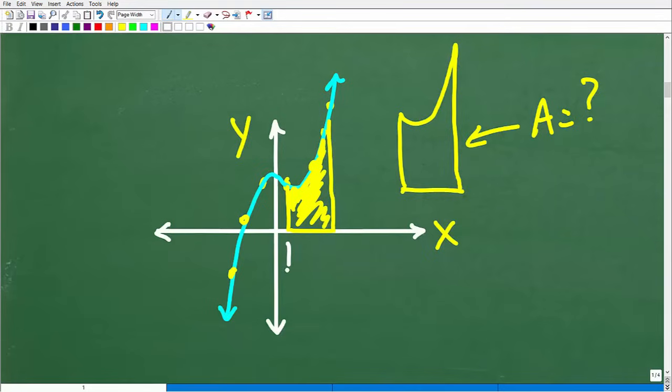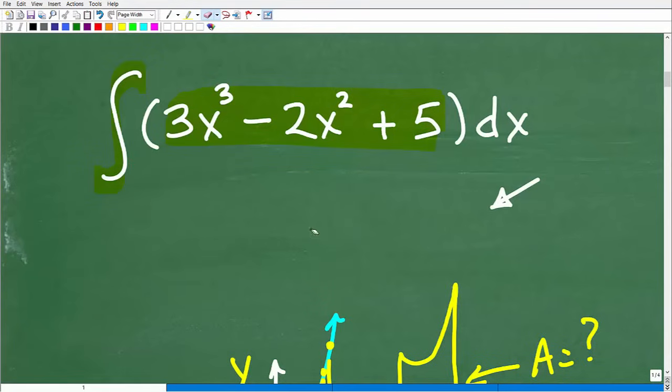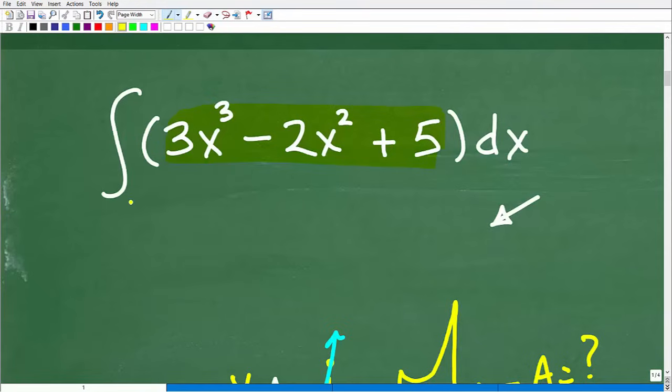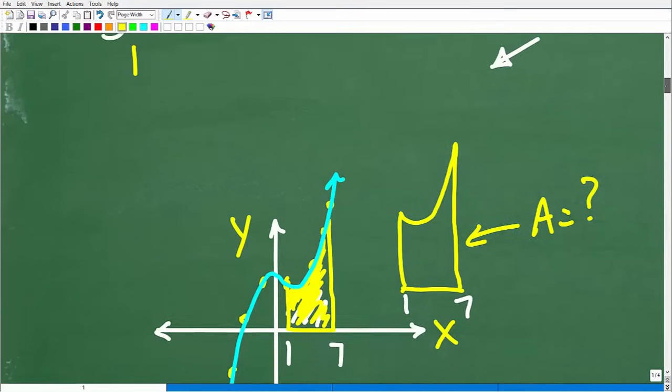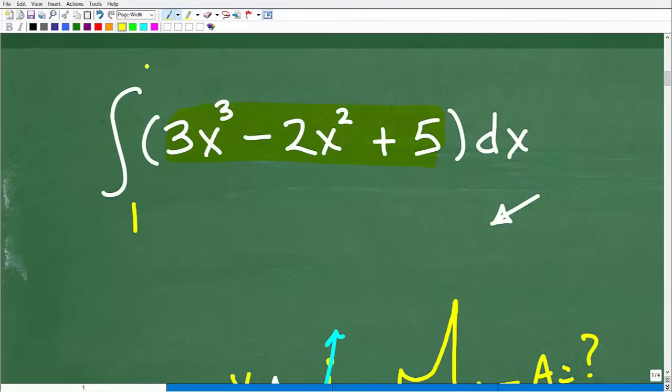We just know it's bounded by this particular function's graph. But let's suppose I wanted to start from 1 and go out to 7 on the x-axis and find the area underneath that curve. What I can do is use this integral. I would go from 1, the left-hand endpoint, to 7. If I write this integral, it means find the area underneath this thing from 1 to 7.